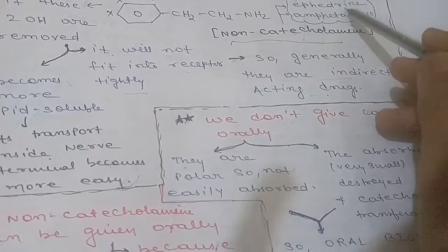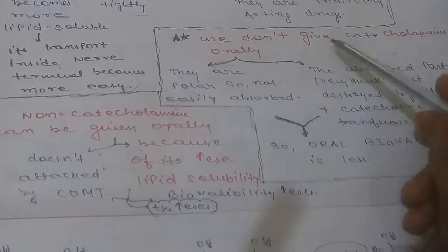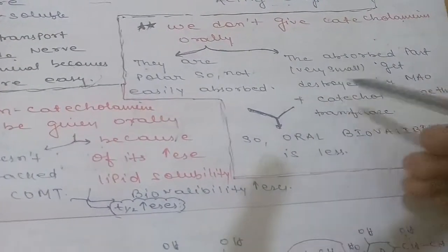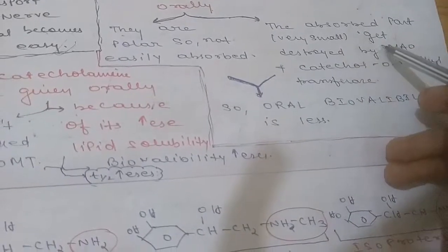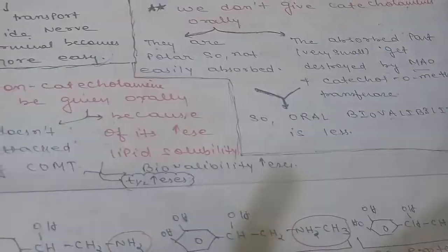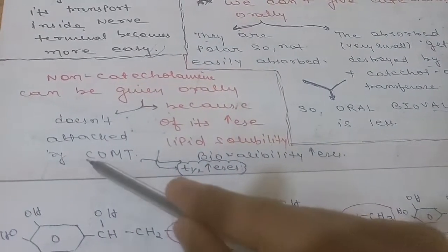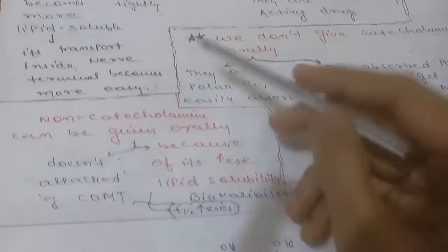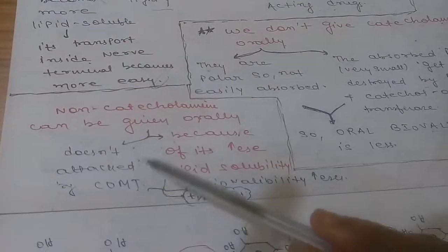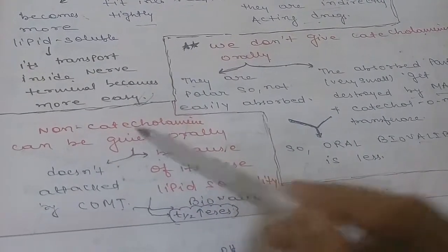Two common examples of non-catecholamines are ephedrine and amphetamines. Catecholamines are generally not given orally because they are polar — any absorbed portion is quickly destroyed by monoamine oxidase and catechol-O-methyltransferase (COMT), so oral bioavailability is very low. Non-catecholamines can be given orally because COMT does not attack them, as they lack the OH groups that COMT methylates.